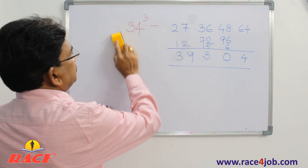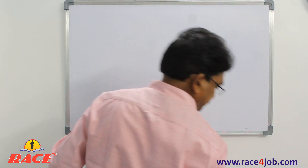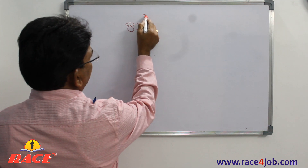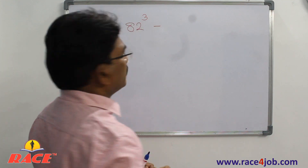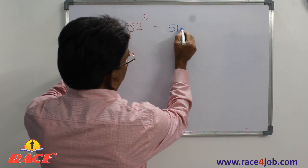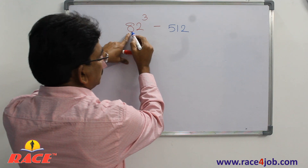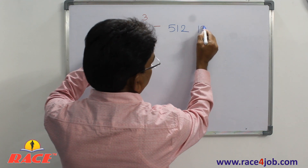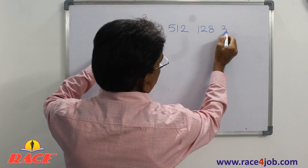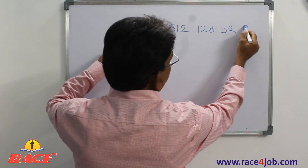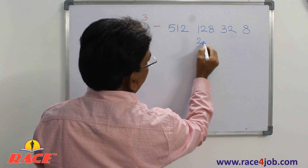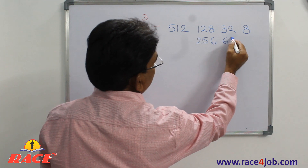Now one more example — 82 cubed, a bigger one. Write four positions: 8 cubed is 512. Then 8 squared into 2 — 64 into 2 is 128. Next, 2 squared into 8 — 4 into 8 is 32. Next, 2 cubed is 8. Double the middle numbers: double of 128 is 256, double of 32 is 64.